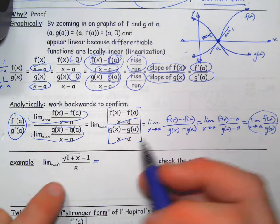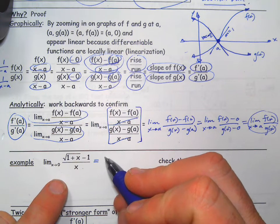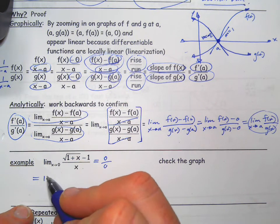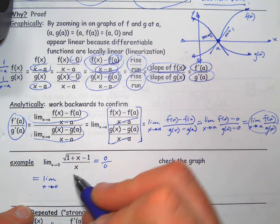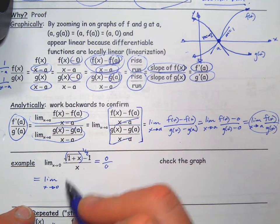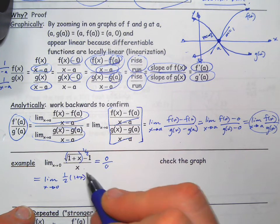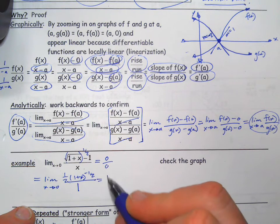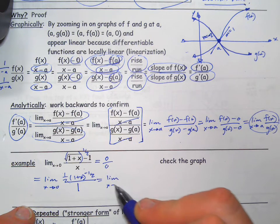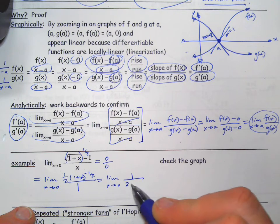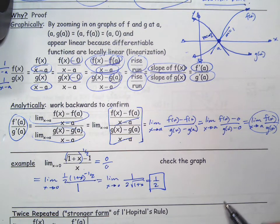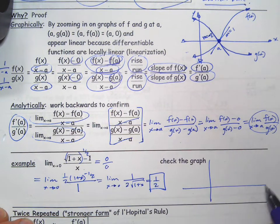Let's try some examples. If we plug zero in here we get √1−1=0 on top and 0 on the bottom, so 0/0. We're going to say this directly equals the limit as x→0 of the derivative of the top over the derivative of the bottom. The top is (1+x)^(1/2), so its derivative is (1/2)(1+x)^(−1/2). The derivative of the bottom is 1. That gives us the limit as x→0 of 1/(2√(1+x)), and plugging in zero gives 1/2.